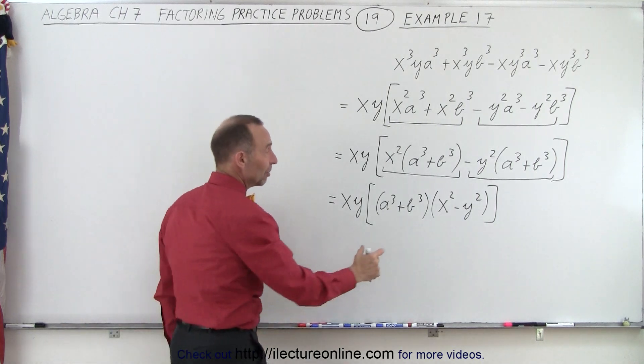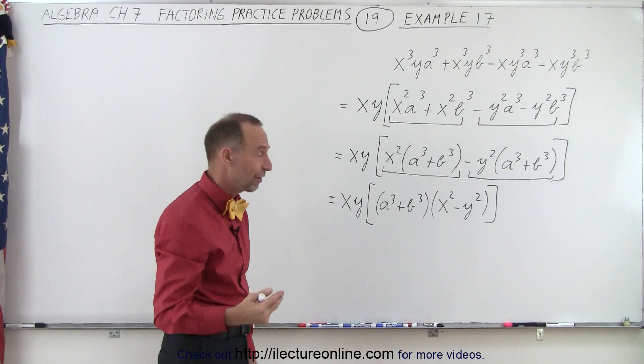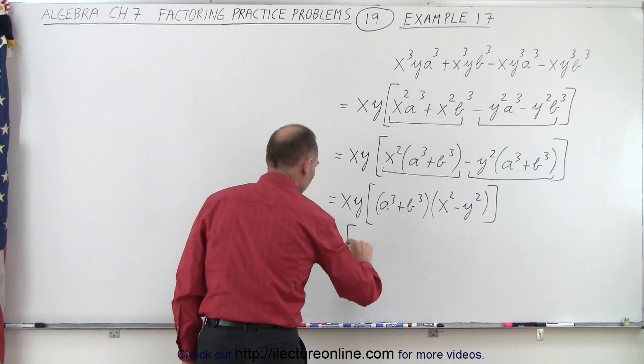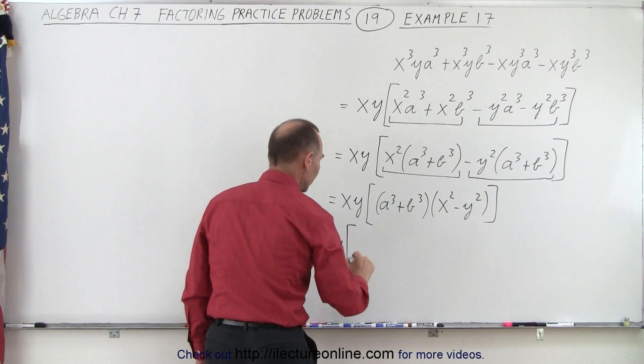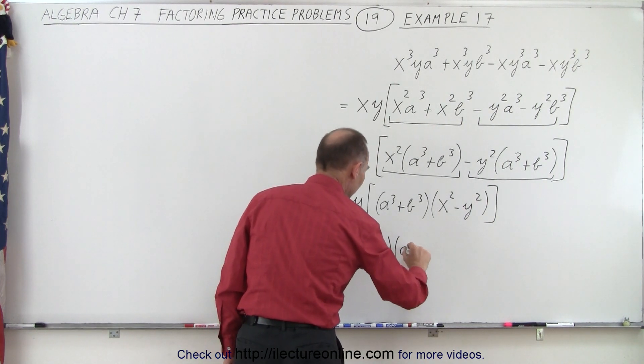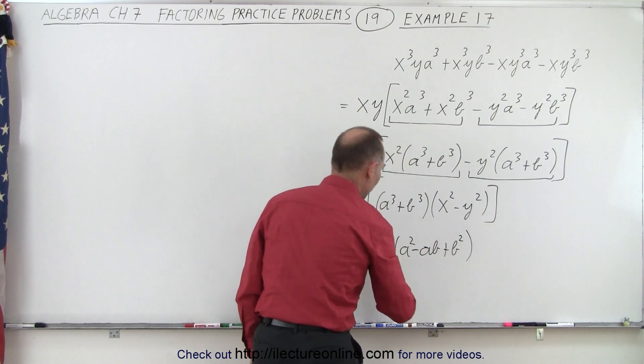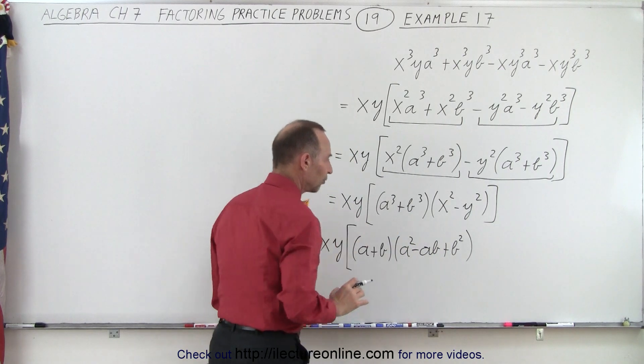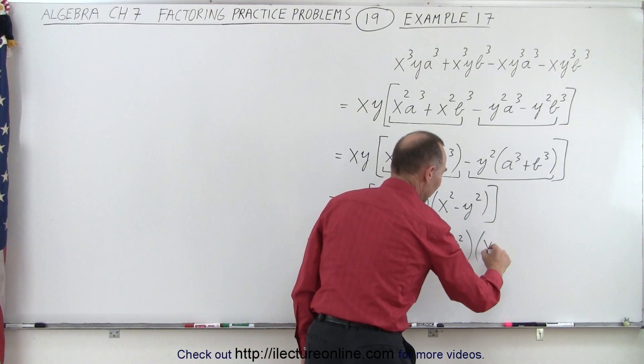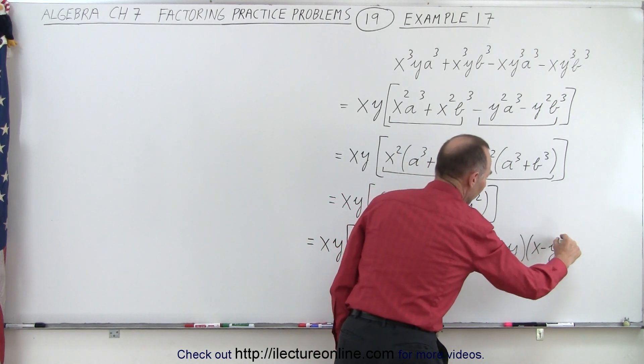Now here we have the difference of squares, and here we have the sum of cubes, and we know how to factor those. So this becomes equal to x times y. And first of all, the sum of cubes, that would be a plus b times a squared minus a b plus b squared. So now we factor out the sum of cubes, and here we have the difference of squares, so this can be factored as x plus y times x minus y.